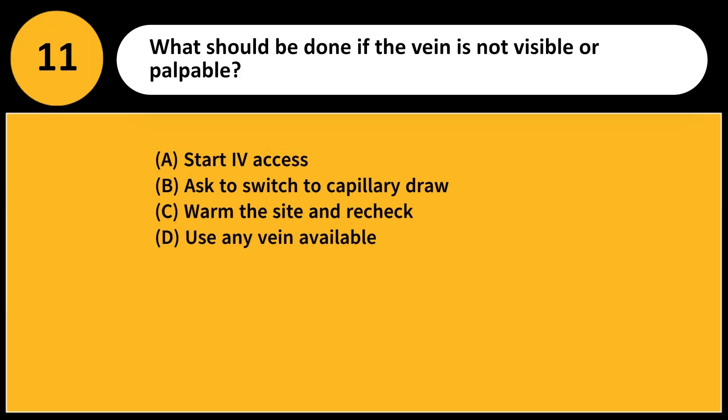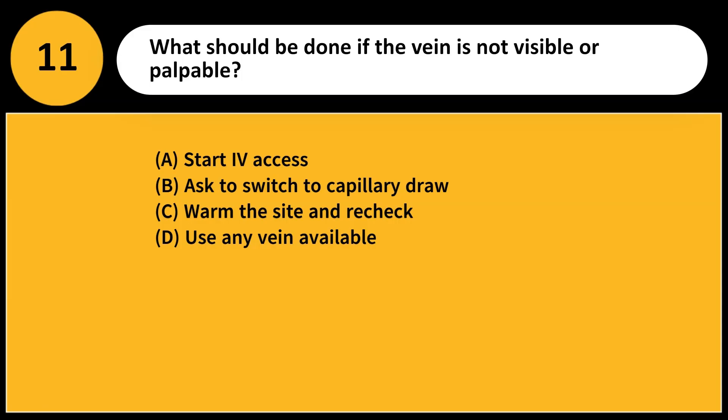What should be done if the vein is not visible or palpable? A. Start for access. B. Ask to switch to capillary draw. C. Warm the site and recheck. D. Use any vein available. Answer: C. Warming dilates veins and improves visibility and palpability.